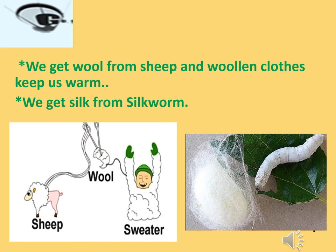We get wool from sheep, and woolen clothes keep us warm. The hair or wool of a sheep is known as fleece, and the process of removing fleece from a sheep is known as shearing.